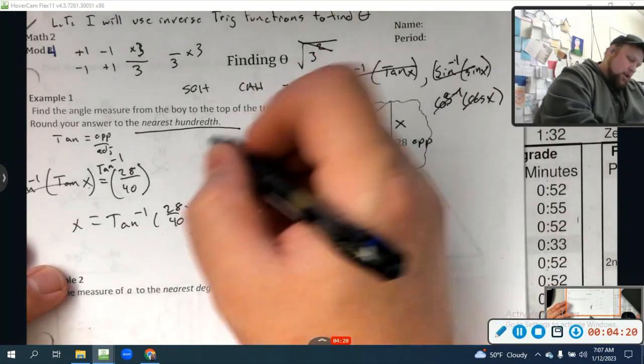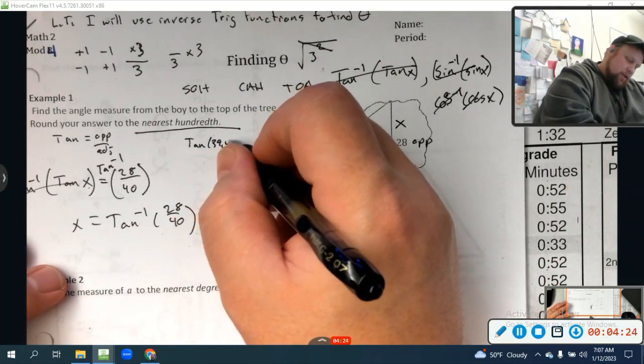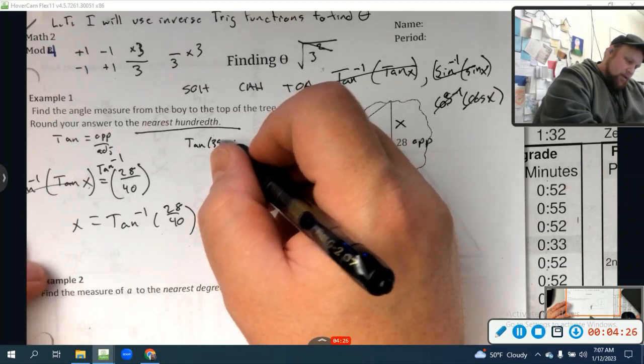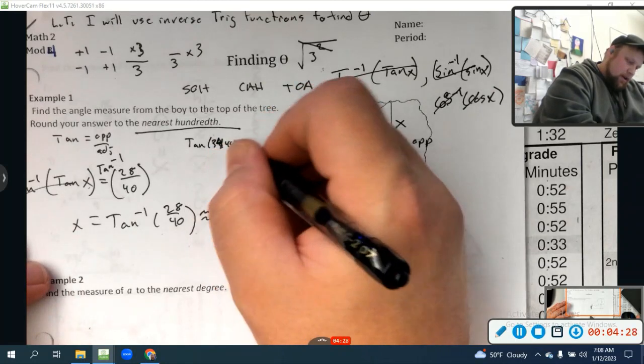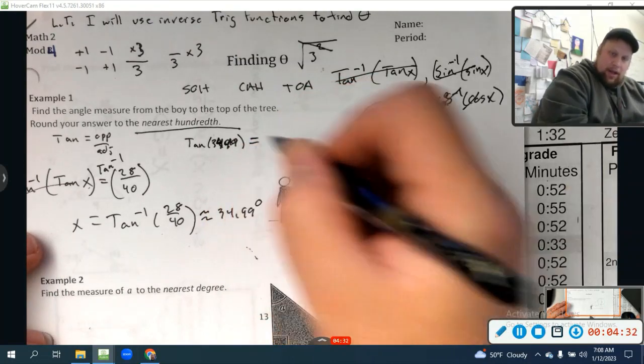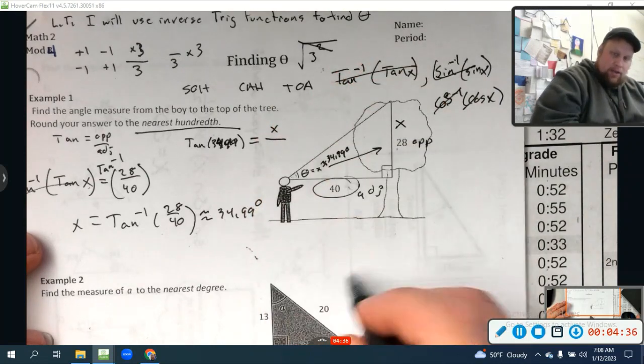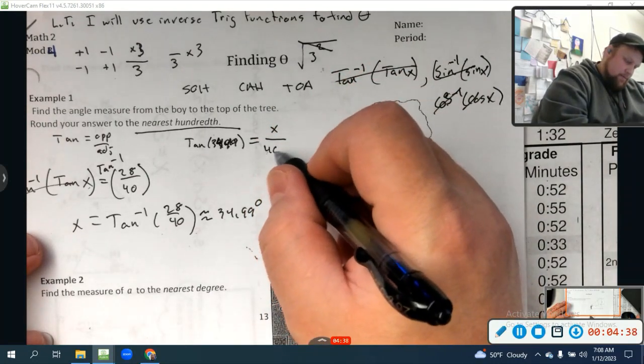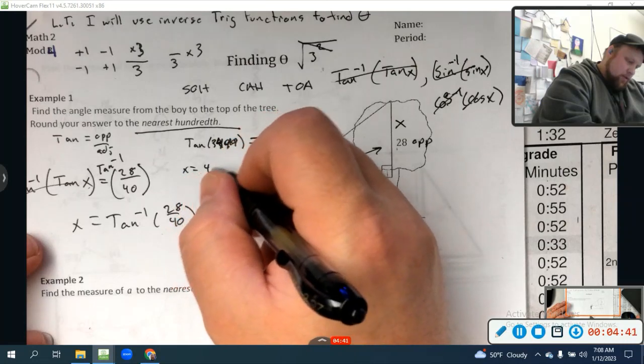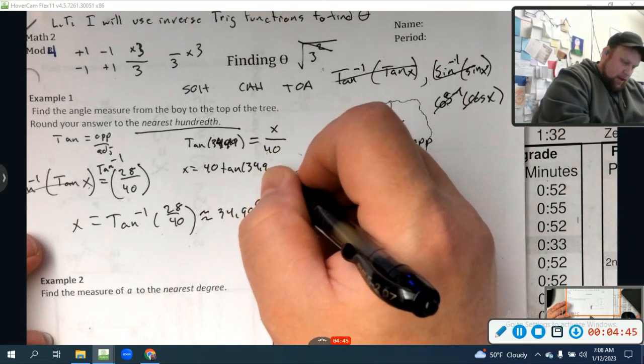Well, then I would know that the tangent of 34.99 degrees should equal my opposite x over my adjacent 40. Which we know, x is going to equal 40 times the tangent of 34.99.